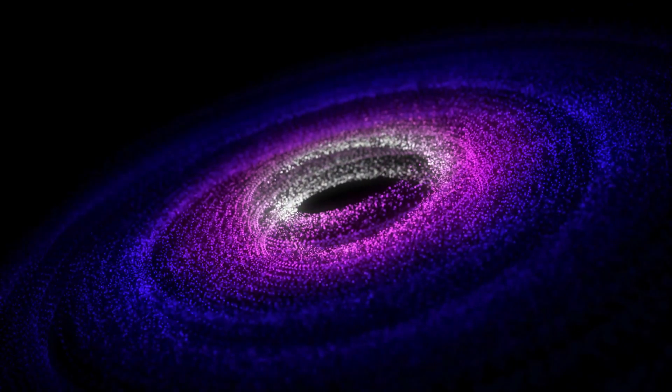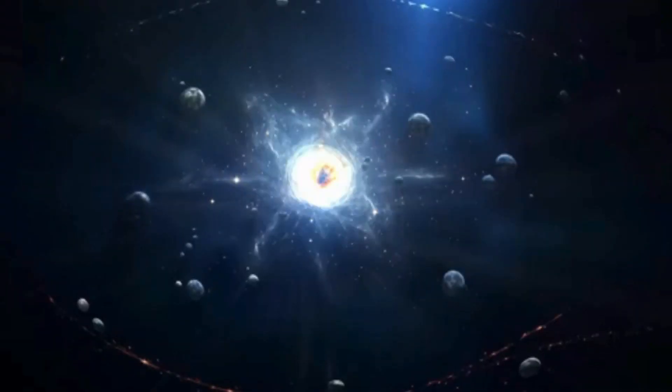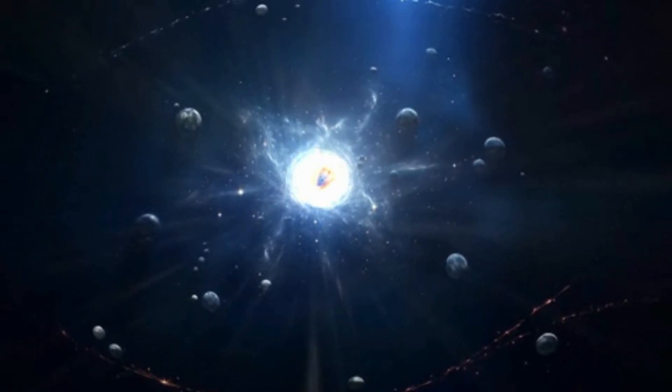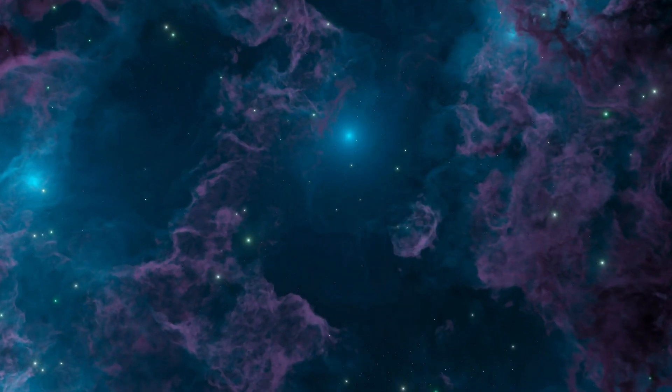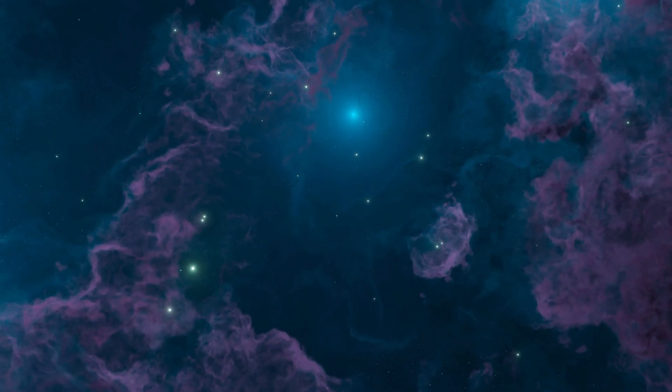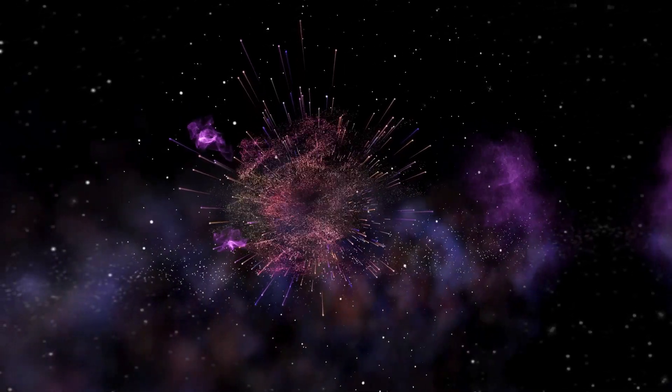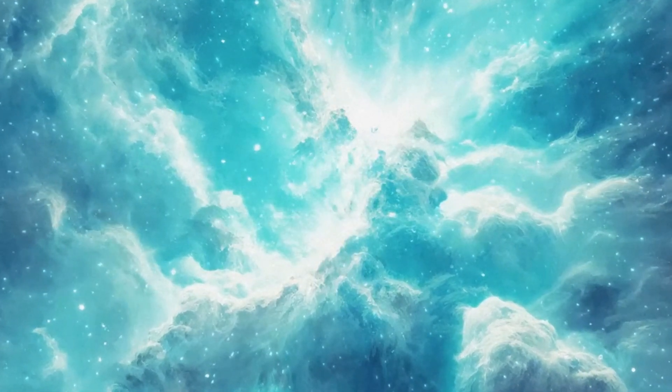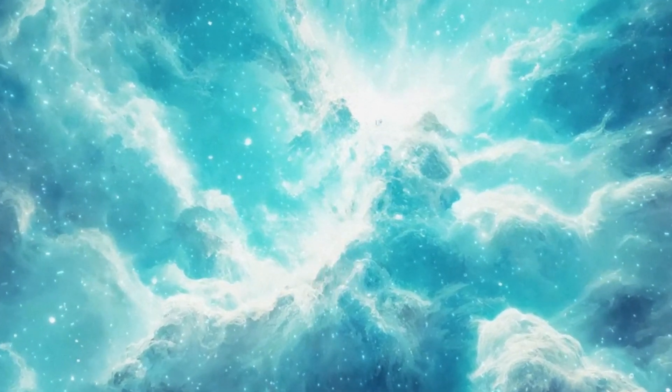A researcher from the University of Cambridge has commented on the implications of these findings, noting that while K2-18b is indeed located within a habitable zone and contains carbon compounds, this does not necessarily mean that the planet can support life. The planet's size, with a radius 2.6 times that of Earth, suggests that its core is likely surrounded by a massive high-pressure mantle of ice, much like Neptune's structure. This implies that while K2-18b has a thinner hydrogen-rich atmosphere and an ocean-covered surface, the conditions within these oceans may be too extreme or unsuitable for life as we know it.